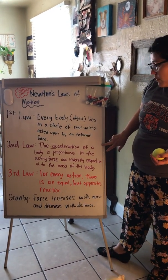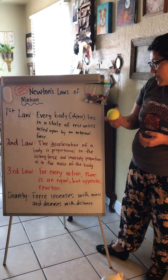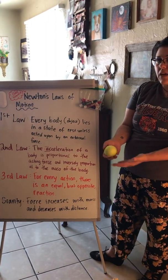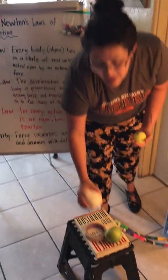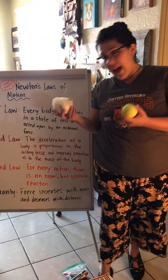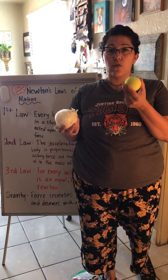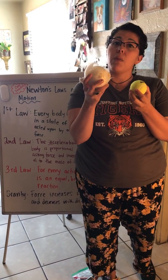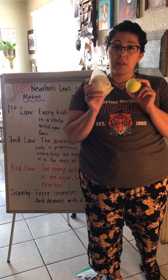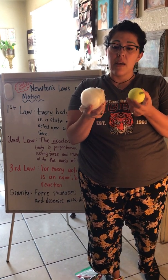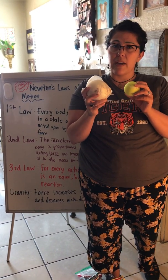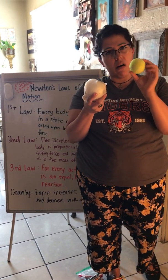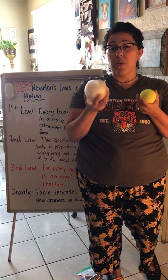The second law of motion states that the acceleration of a body is proportional to the acting force and inversely proportional to the mass of the object. That means something that has less mass is going to move less quickly than something with more mass. So if I put the same force on both of these objects, they're going to move at a different rate because of how much space they occupy. This ball is hollow and this one is full, so they have different mass.